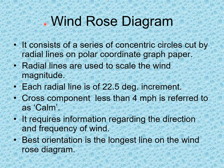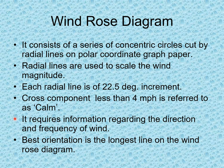We now discuss the windrose diagram, which helps determine the best orientation of the runway. It consists of concentric circles cut by radial lines on polar coordinate graph paper; radial lines are used to scale the wind magnitude. Each radial line is at 22.5-degree increments. A crosswind component less than 4 miles per hour is referred to as calm. It requires information regarding the direction and frequency of wind from the meteorological department. The best orientation is the longest line on the windrose diagram.